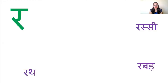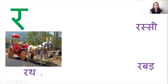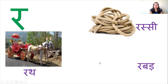Now let's see the pictures which start with the letter R. Ra se 'rath' — rath is a chariot. In English we call it a chariot. You can see horses are pulling this chariot. On this chariot even the prince or king used to sit. Nowadays we don't have kings or princes; these chariots are used for politicians or marriages. In Hindi we call it rath.